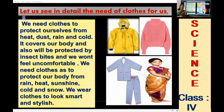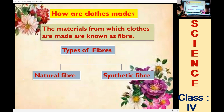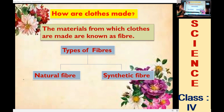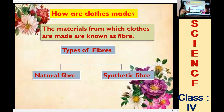Now, the important thing we are going to discuss is fiber. So what does it mean by fiber? Fiber is the material from which clothes are made. There are two different types of fibers: the first one is natural fiber, and the second one is synthetic fiber.